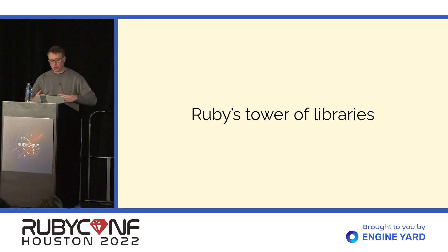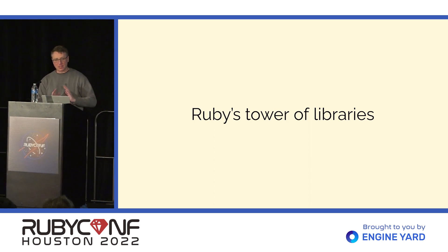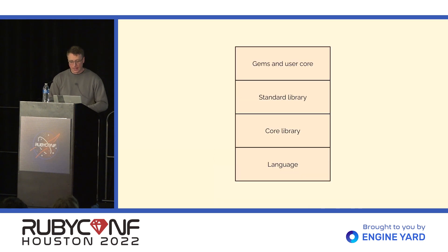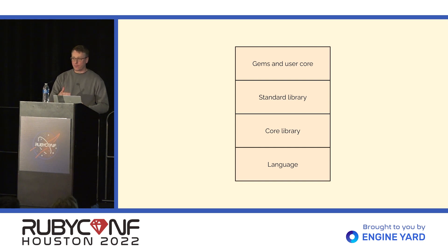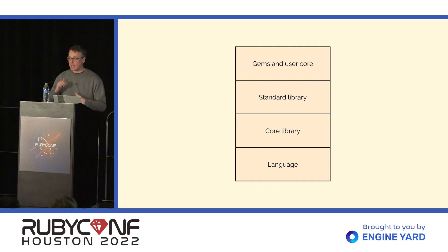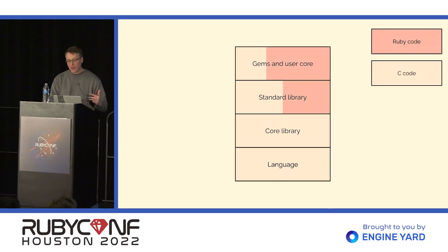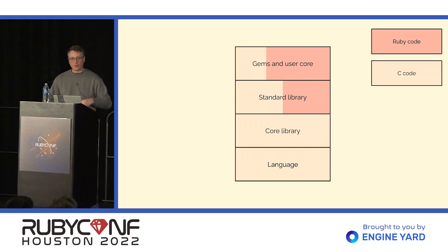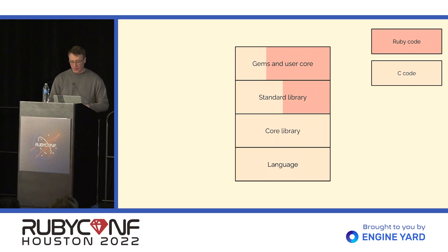So one of the core concepts I want to talk about is Ruby's tower of libraries. We can talk about Ruby's different sorts of libraries and where they sit in a tower. We have the language — the core Ruby language in the Ruby interpreter. Above that, we have the core libraries. And then above that, we have the standard library, which is things like JSON that you can require without installing anything. On top of that, we have gems and user code. The further down the stack you are, the more stuff is written in low-level C, and the higher you get, the more it's written in Ruby. Currently, the core library is written almost entirely in C, and that's what we're going to talk about today.